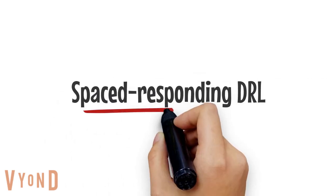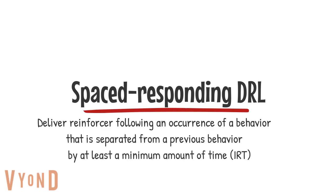In spaced responding DRL, the reinforcer is delivered following an occurrence of behavior that is separated from the previous behavior by at least a minimum amount of time, known as IRT — inter-response time. For example, instead of asking to go to the bathroom every 5 minutes, the learner would be required to space that out and ask every 10 minutes.